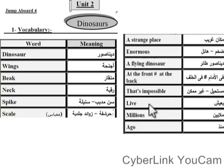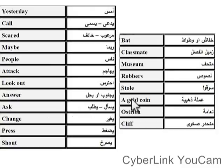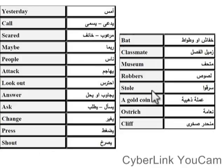Live. Millions. Ago. Yesterday. Call. Scared. Maybe. People. Attack. Look out. Answer. Ask. Change. Press. Shout. Pat. Classmate. Museum. Groupers. Stall. A gold coin. Ostrich. Clef.